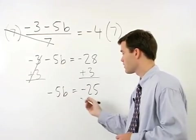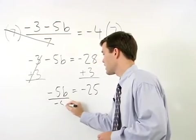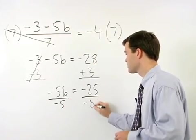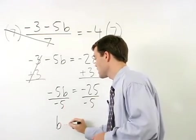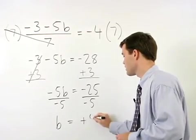To get b by itself, divide both sides by negative 5, and b equals positive 5.